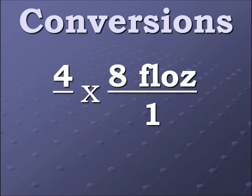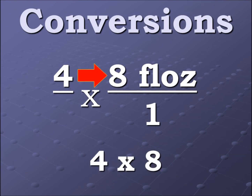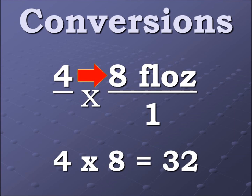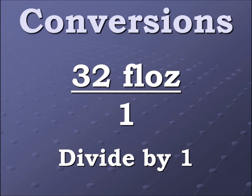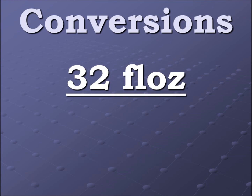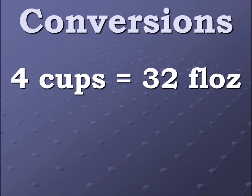Now fluid ounces is the only label left. We multiply, then divide by one, which leaves 32 fluid ounces. That's our solution — four cups are equal to 32 fluid ounces.